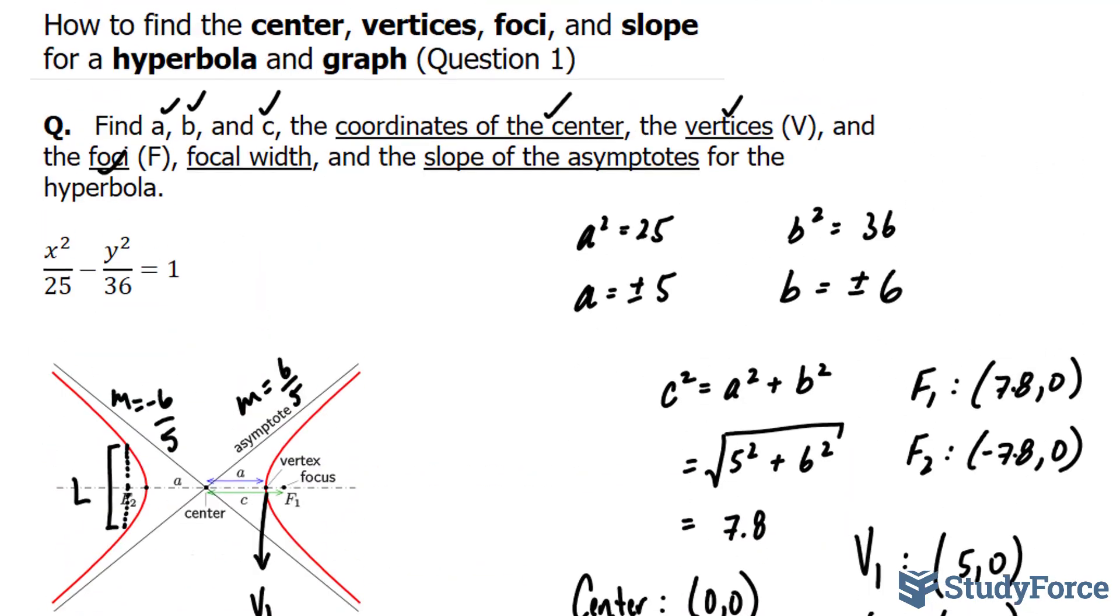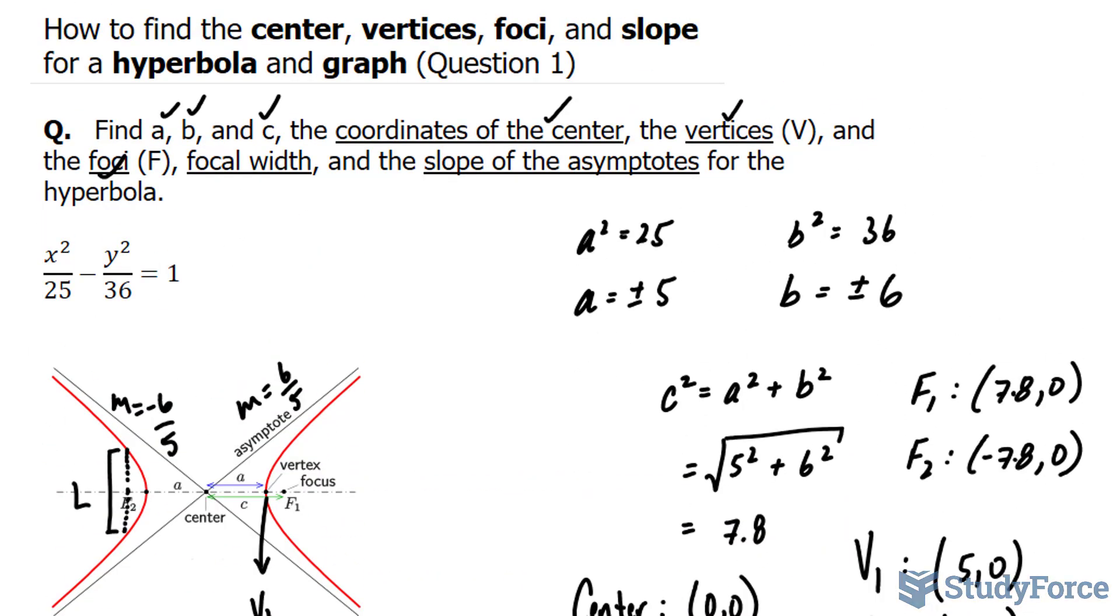And there you have it. That is how to find the center, vertices, foci, and slope for a hyperbola, and the graph can be represented like this. Be sure to watch question 2 for a slightly more complicated example.